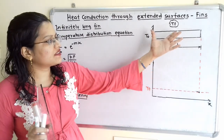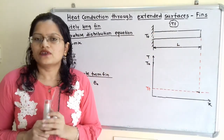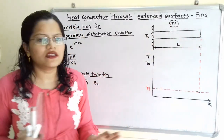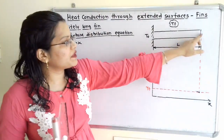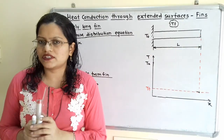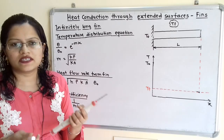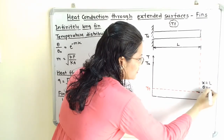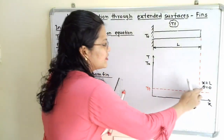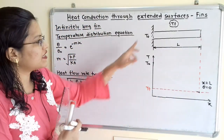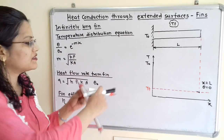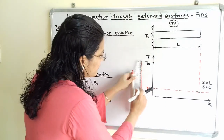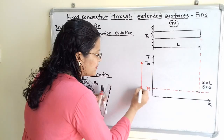Since this length is infinitely long, the conduction and convection heat transfer causes the temperature difference between the fin material and the surrounding to become zero at the end. So at x = L, theta equals 0. The temperature difference at the base is T_O minus T_F, which we express as theta_O.